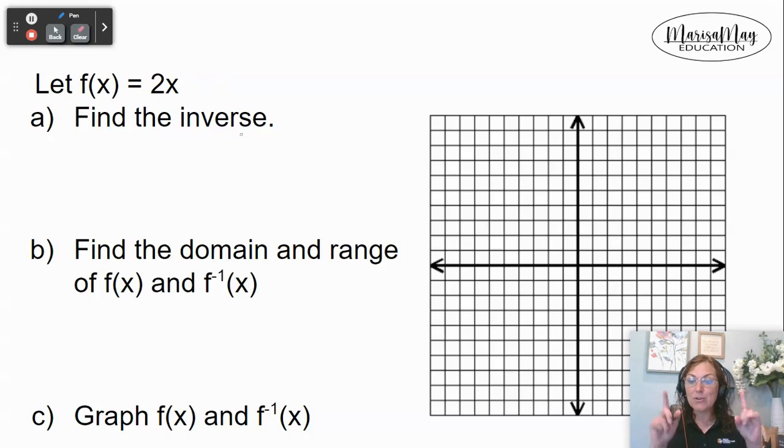Now, in order to find the inverse, we're going to switch the x and the y. And you may be saying, well, where's the y? So let's rewrite this as y equals 2x instead of using that function notation. And now we can switch the x and the y. So now we have x equals 2y. We just switch them.